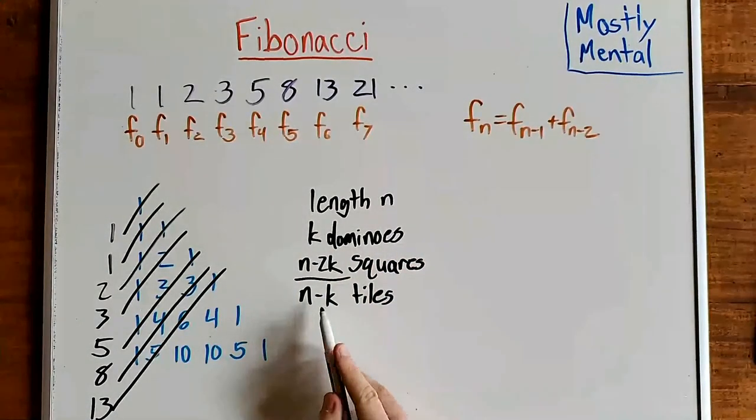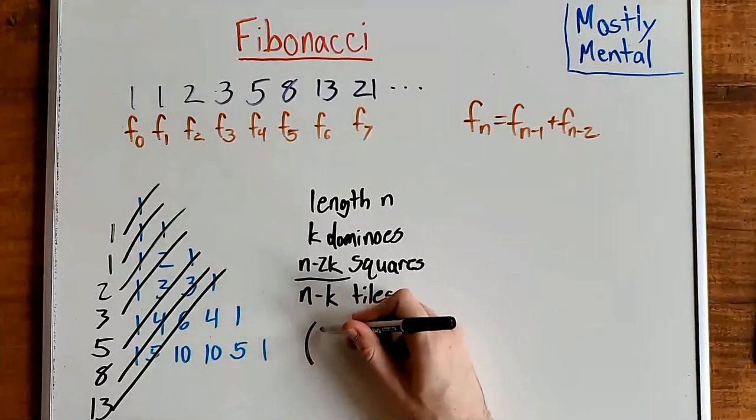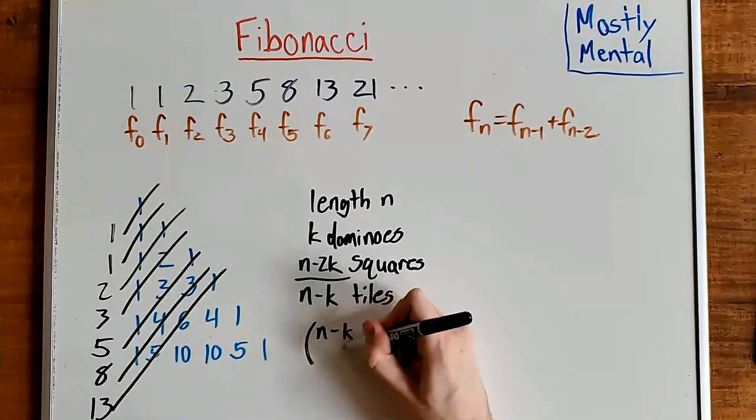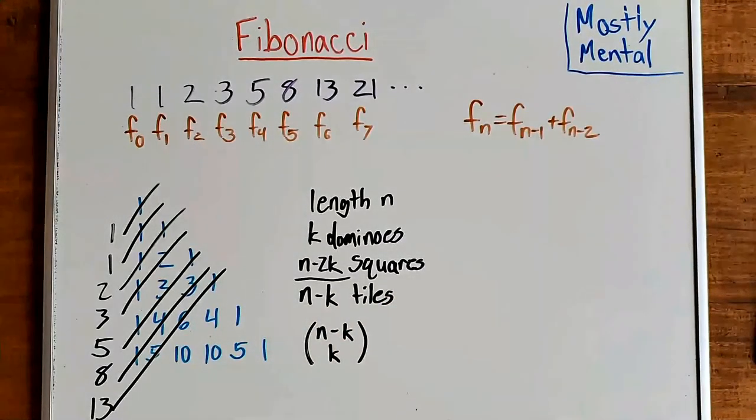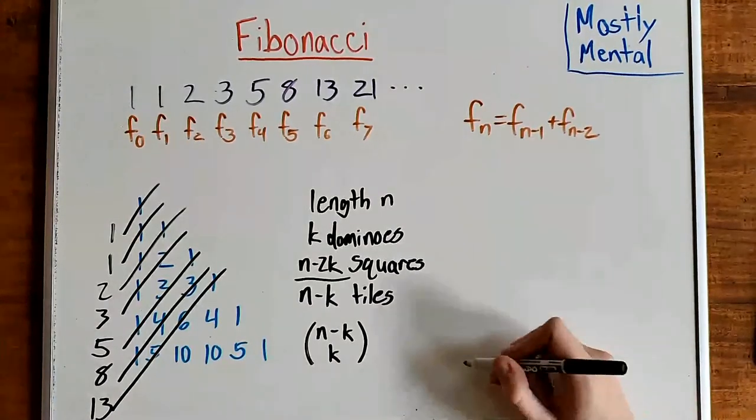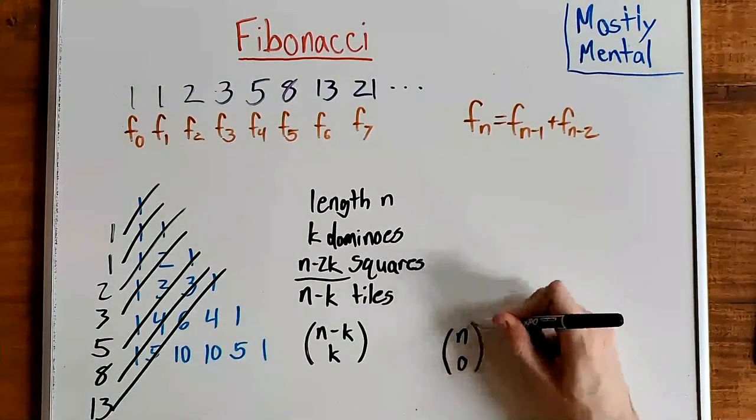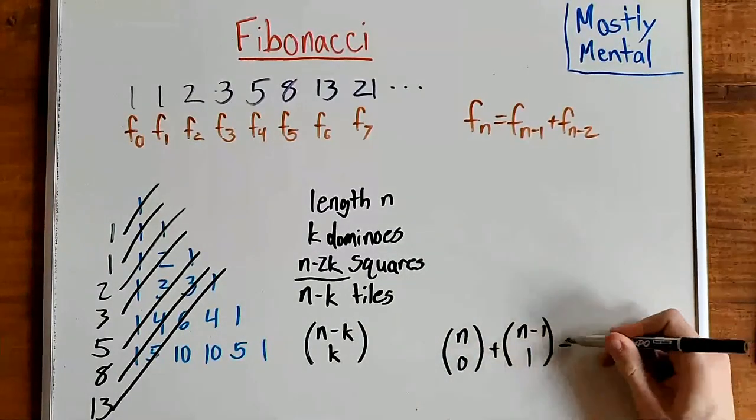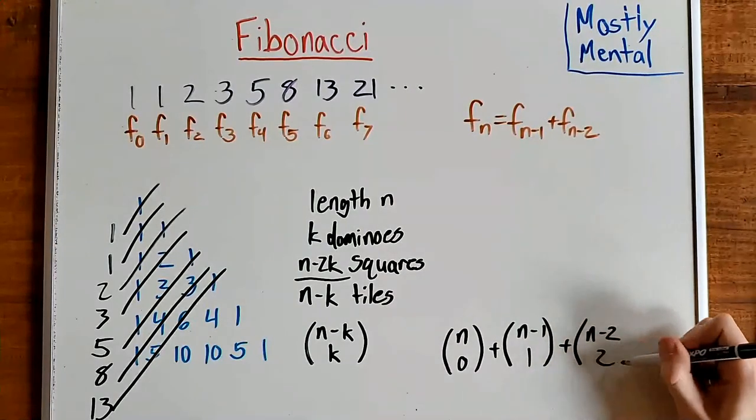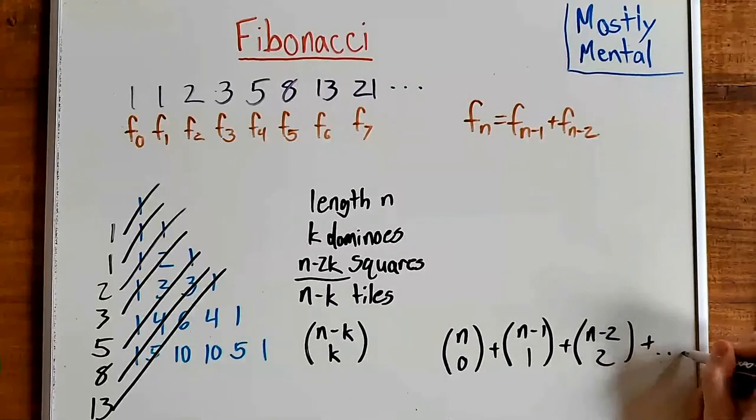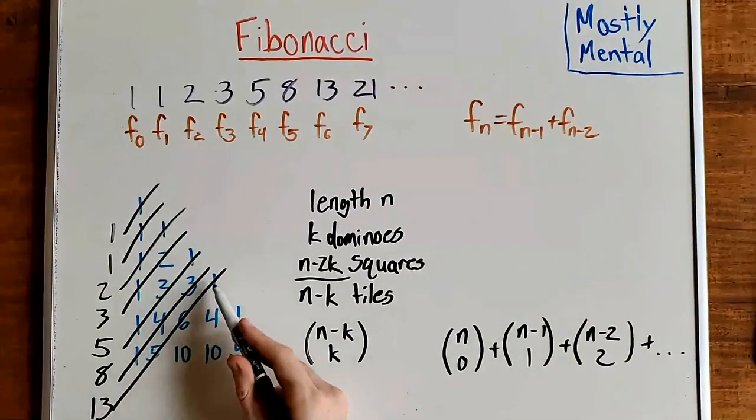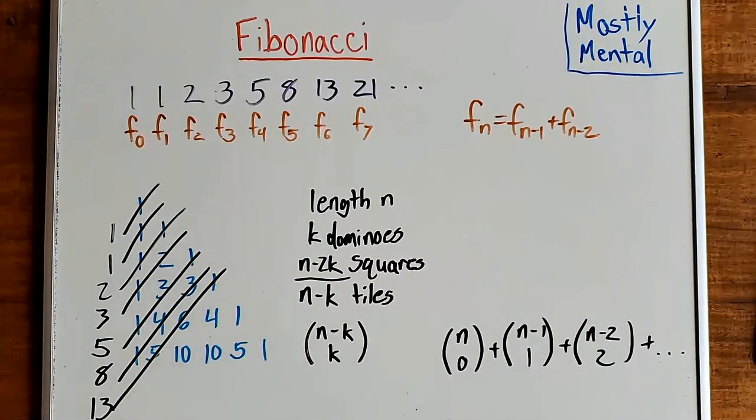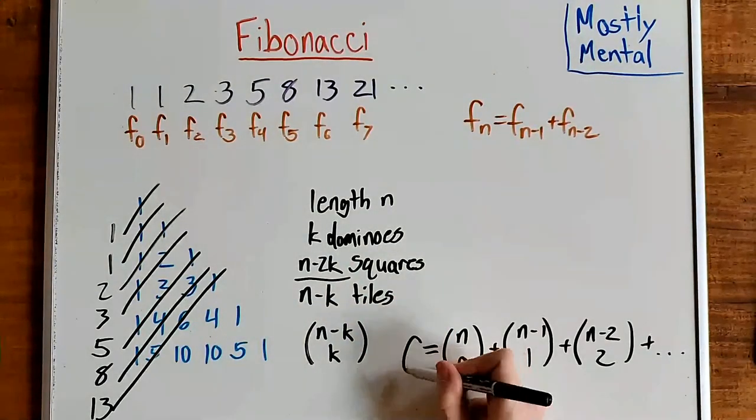And of those n minus k, k must be dominoes. So we have n minus k choose k tilings that use k dominoes. Summing over all k, we have n choose 0, plus n minus 1 choose 1, plus n minus 2 choose 2, and so on. Which is the sum of this diagonal. But again, this is also the number of tilings for a row of length n. So that gives us f sub n.